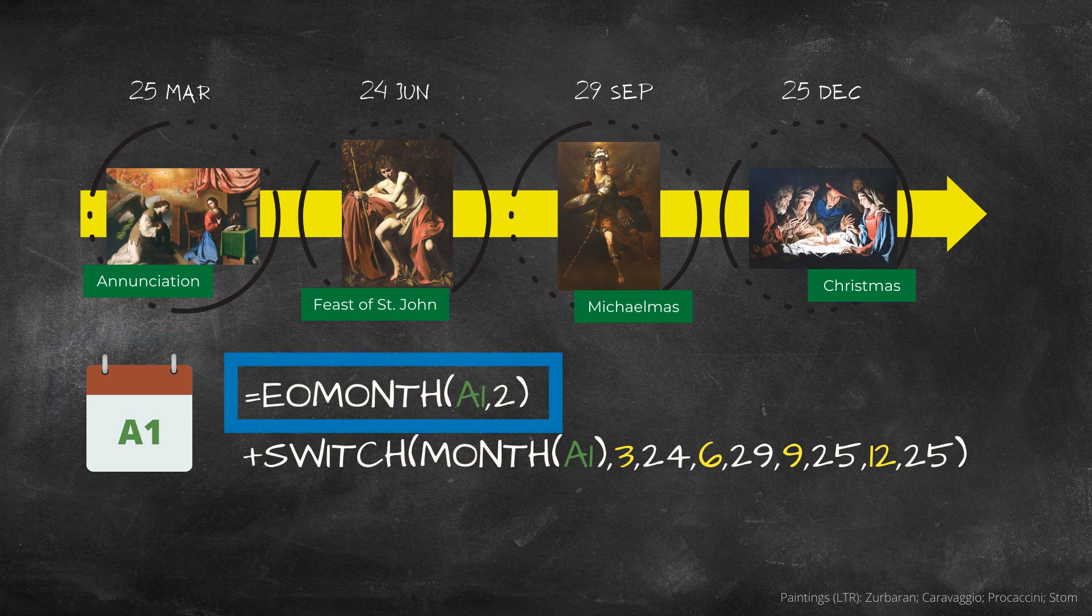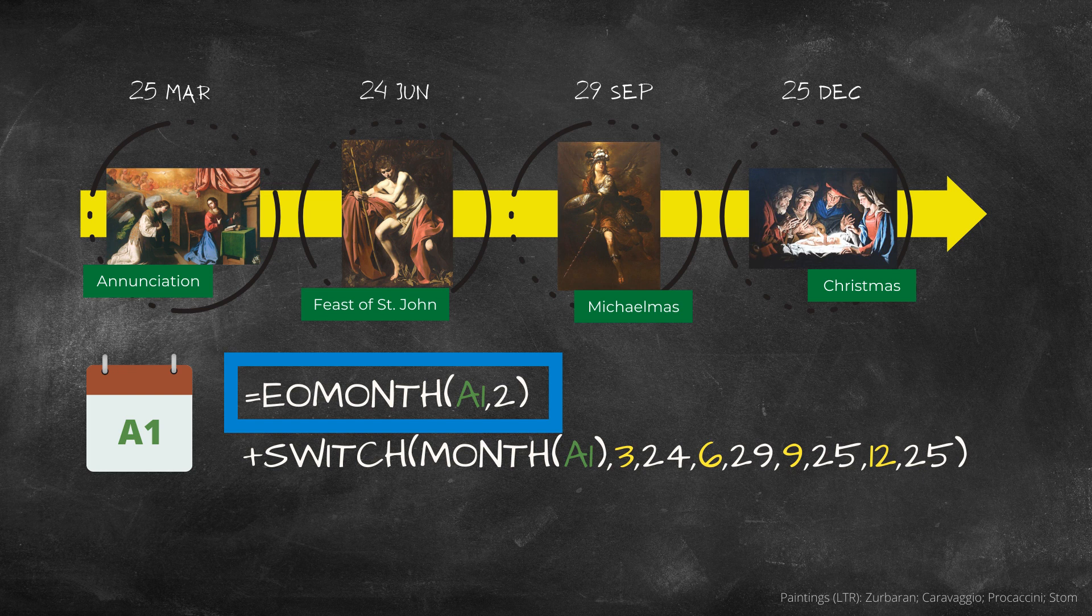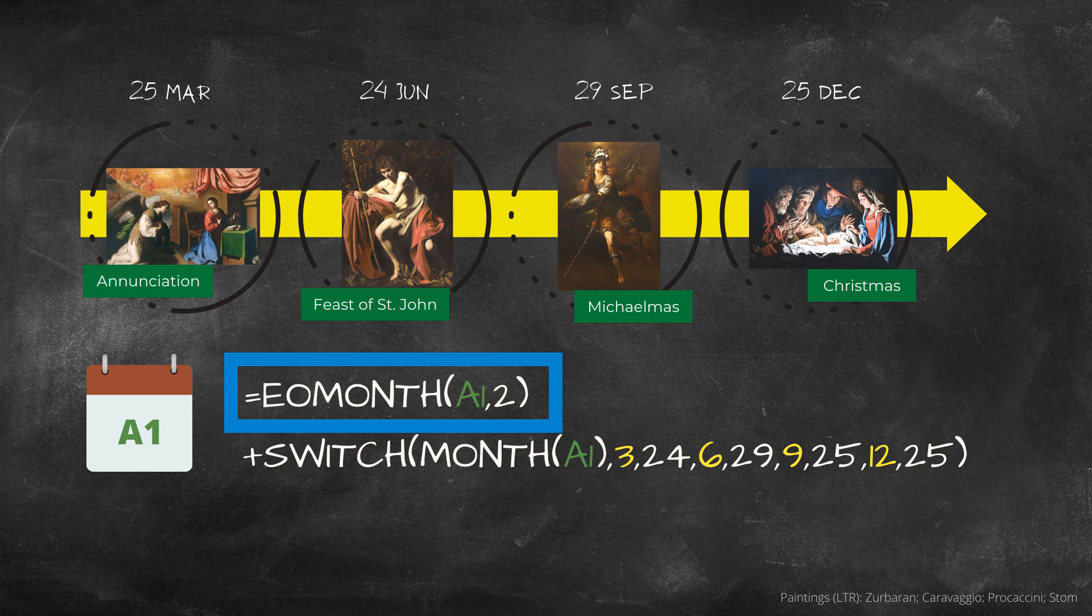EOMONTH stands for end of month, and the function has two arguments. The first argument is a date, and the second argument is the number of months. If we put the previous date in the first argument and the number two in the second argument, EOMONTH will add two months to the 25th of March 2021.